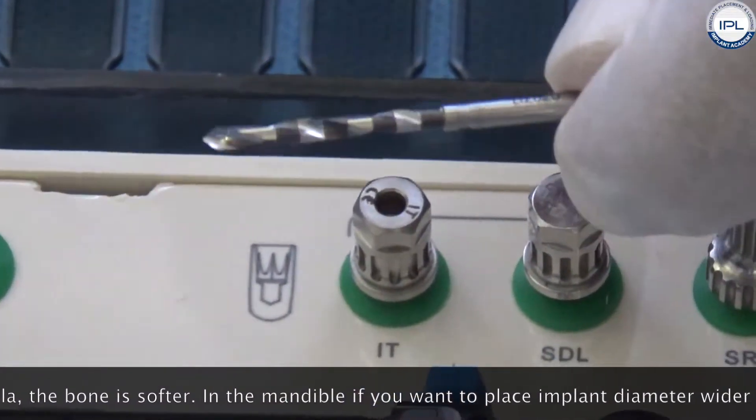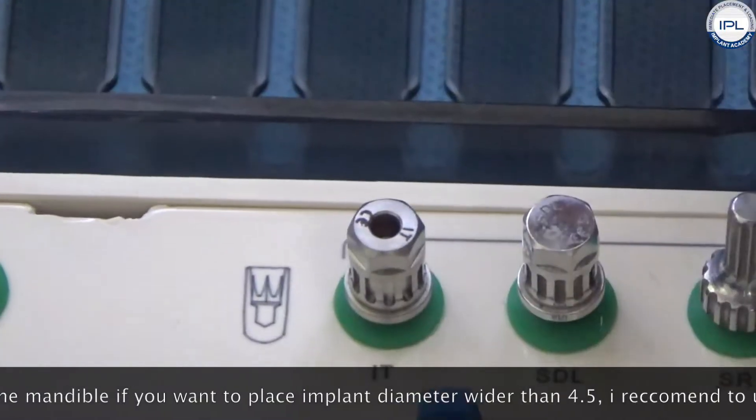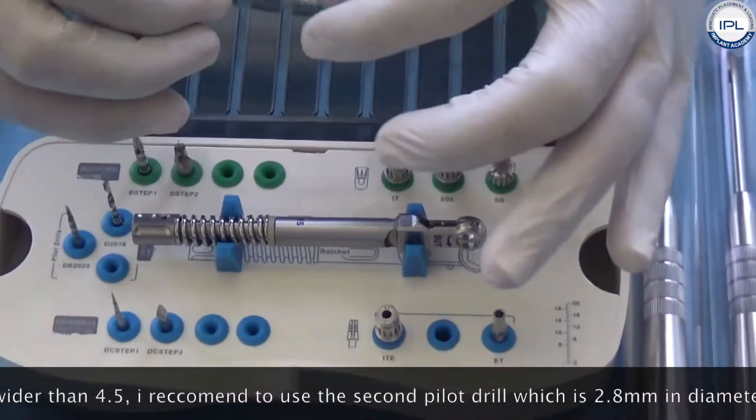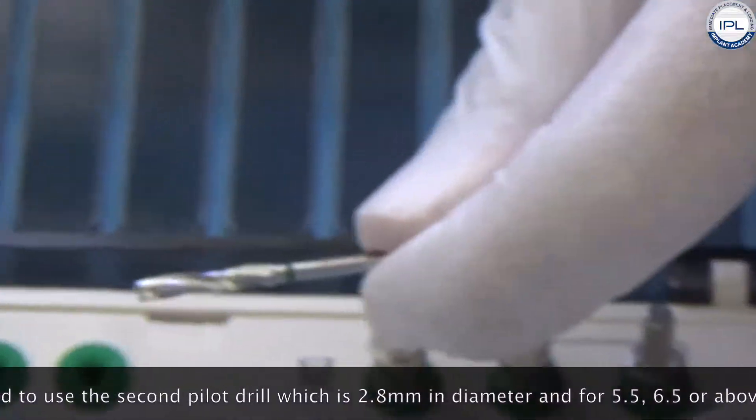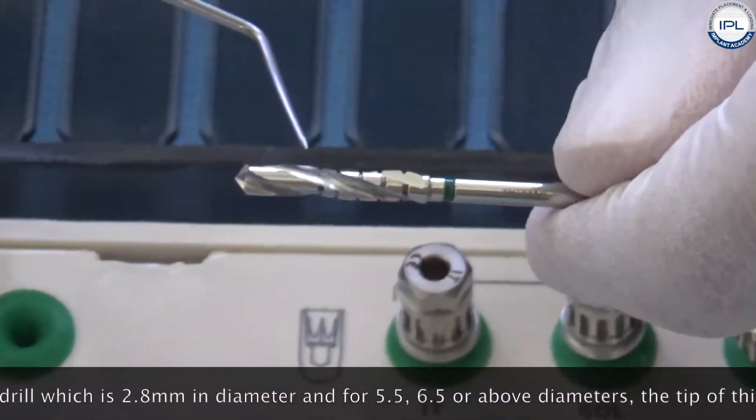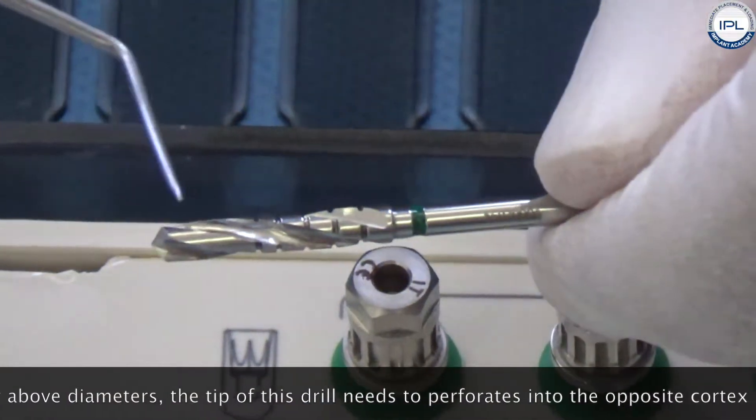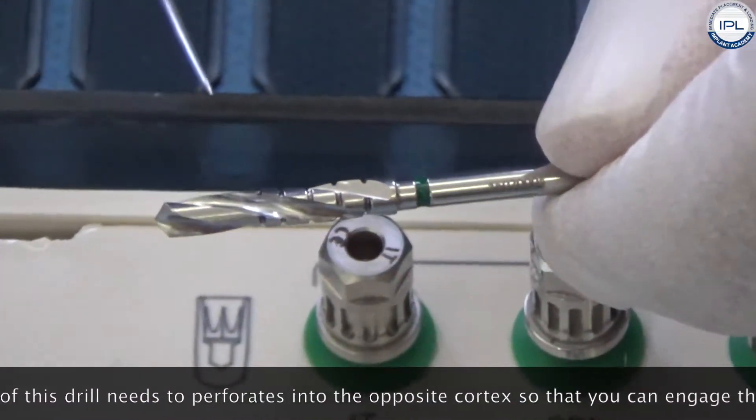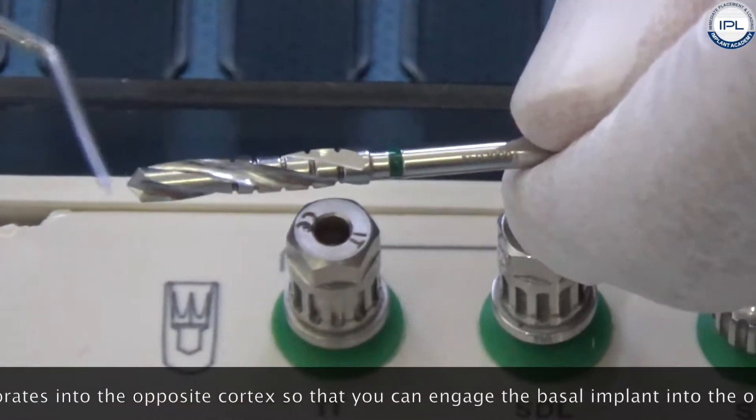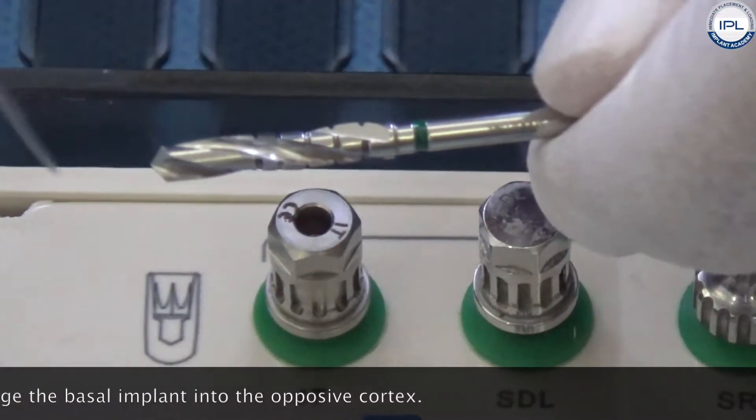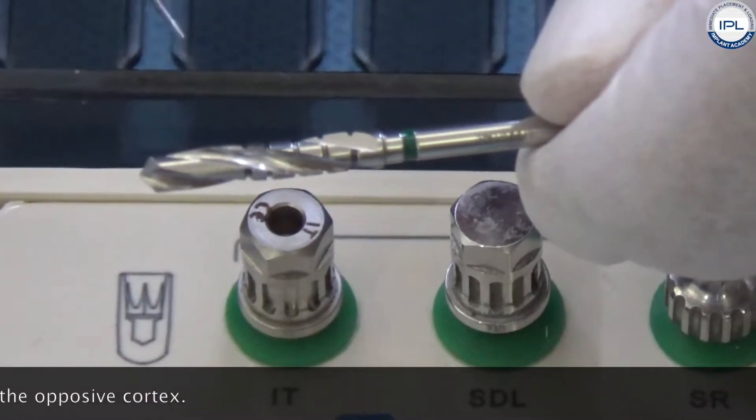In the mandible if you are going to place implant diameters wider than 4.5, I recommend you get this drill. This is the second pilot drill. This is 2.8 millimeters in diameter and for 5.5, 6.5 and above diameters, the tip of this drill needs to perforate the opposing cortex so that you can engage the basal implant into the opposing cortex.